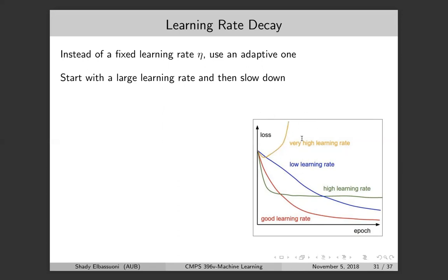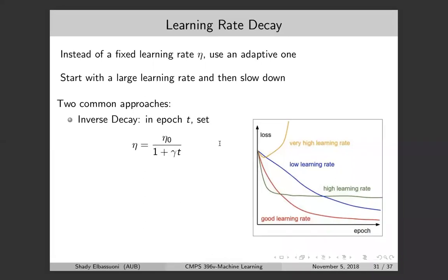If the learning rate is very high you end up with bad weights. If it's very low like the blue line, you minimize the error but very slowly. If it's just right like the red line, you drop the error and reach the minimum fast. Since we don't know how to set it as a constant, one approach is adaptive learning — what's called rate decay.